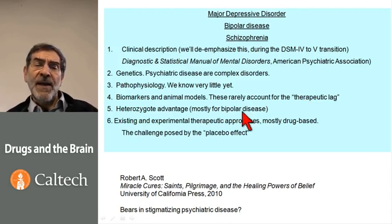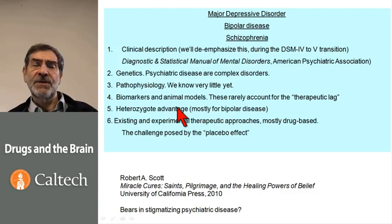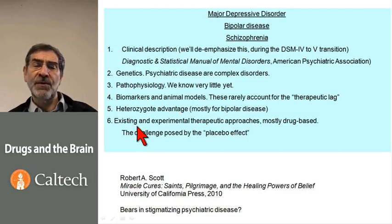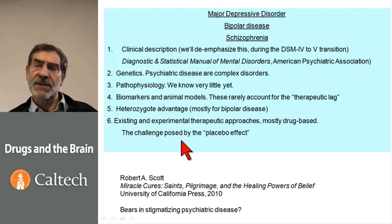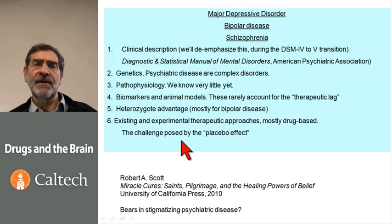When we discuss bipolar disease, we'll talk about the heterozygote advantage, and of course we will emphasize drug therapeutic approaches — both the existing ones and how they work, and the experimental ones and what their prospects are. We'll also discuss right here, and then not again, the challenge posed by the placebo effect.